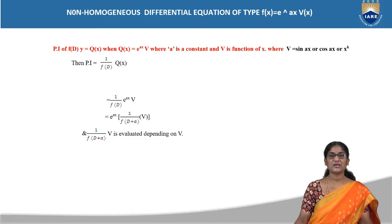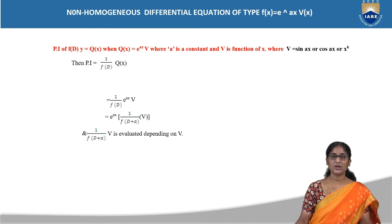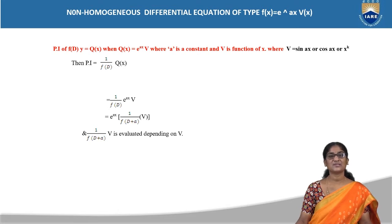In this method, we all know that the differential equation is said to be non-homogeneous if it is in the form of f(D)·y = Q(x). If Q(x) is equal to 0, there is no need to find out the particular integral. If Q(x) is not equal to 0, we need to find out the particular integral to find out the general solution.